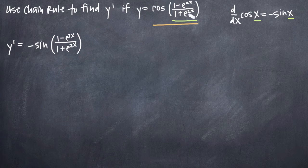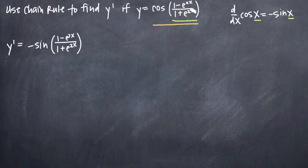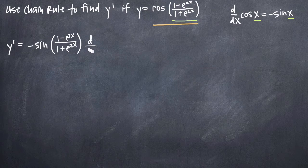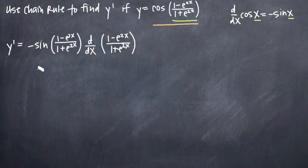Chain rule tells us that whenever we have something more complicated than just x inside, we need to multiply the result we got when we took the derivative of the outside by the derivative of the inside. So now we need to multiply this answer by the derivative of 1 minus e to the 2x over 1 plus e to the 2x. Now it just becomes a matter of taking the derivative of this inside function, which we'll do using quotient rule.